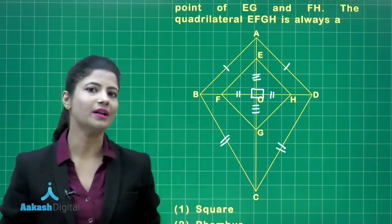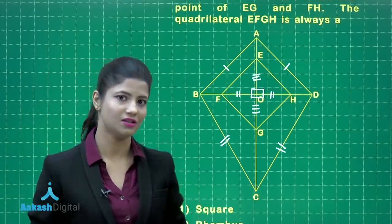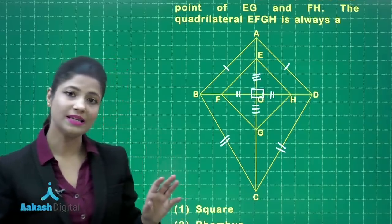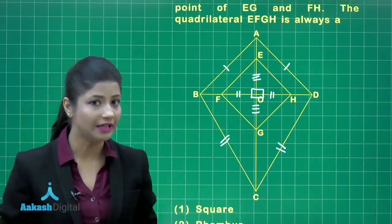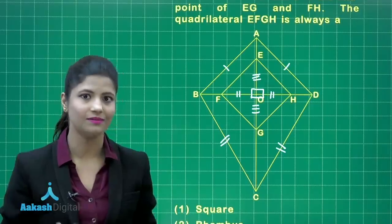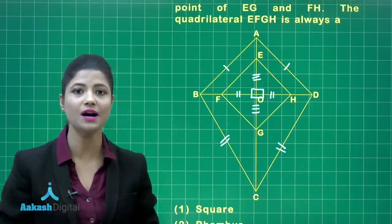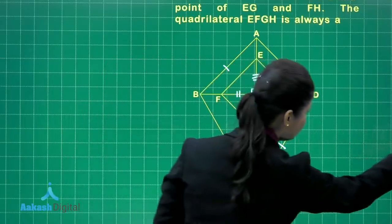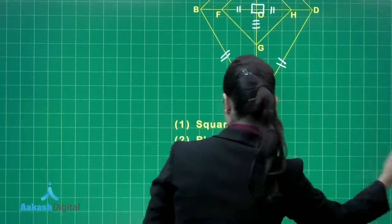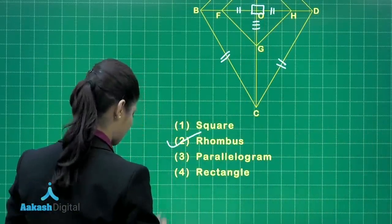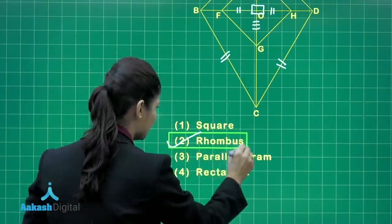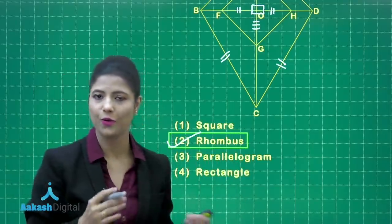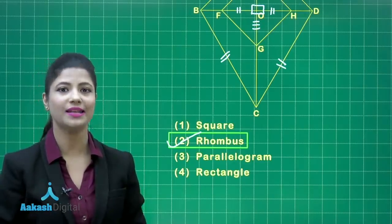A quadrilateral whose diagonals bisect each other is a parallelogram, and when those diagonals also bisect each other perpendicularly, that parallelogram is a rhombus. So EFGH is a rhombus, which is option number 2 — the correct answer. I hope it is clear. Let's proceed to the next question.